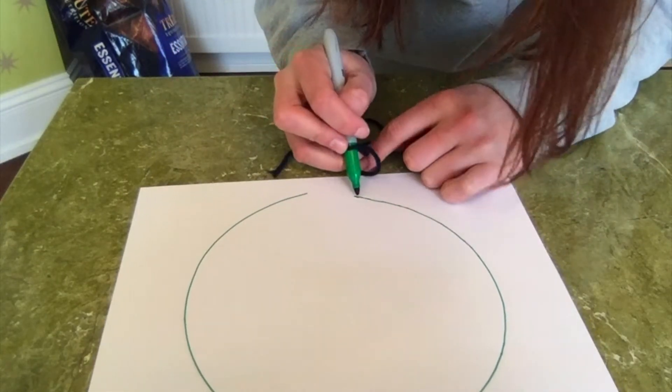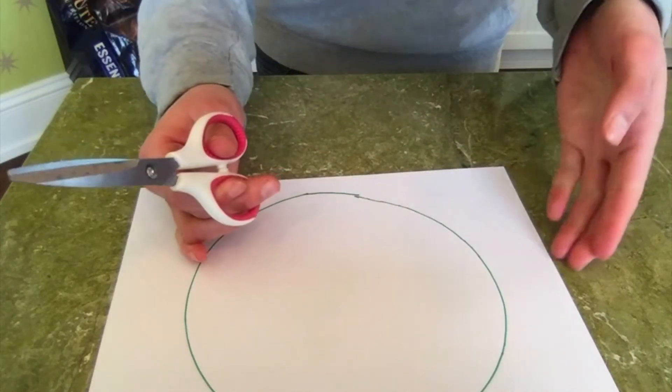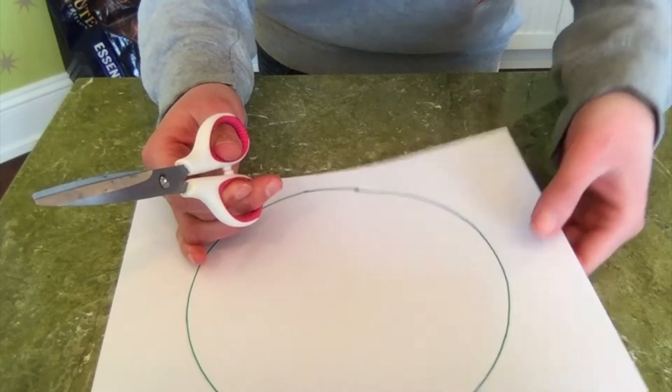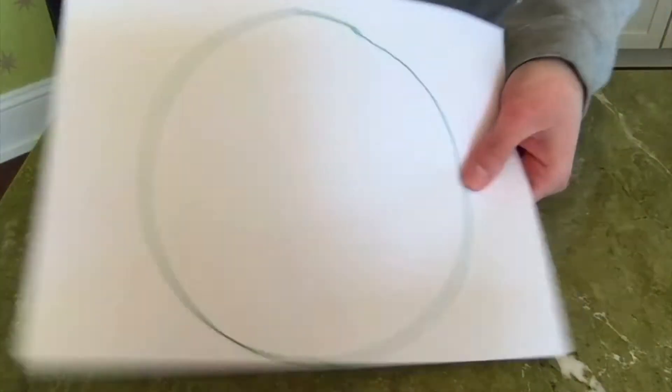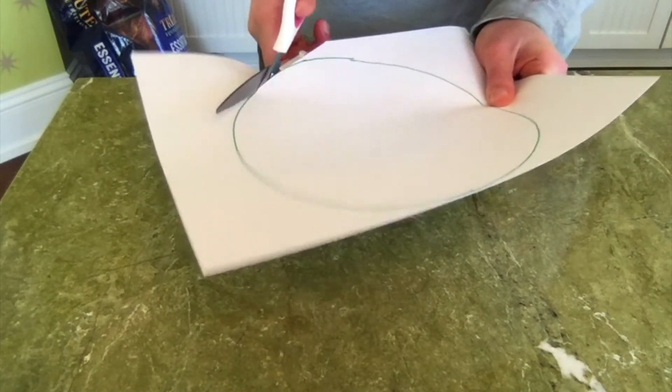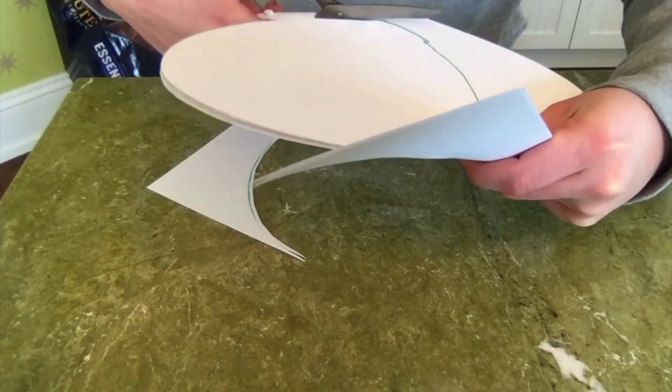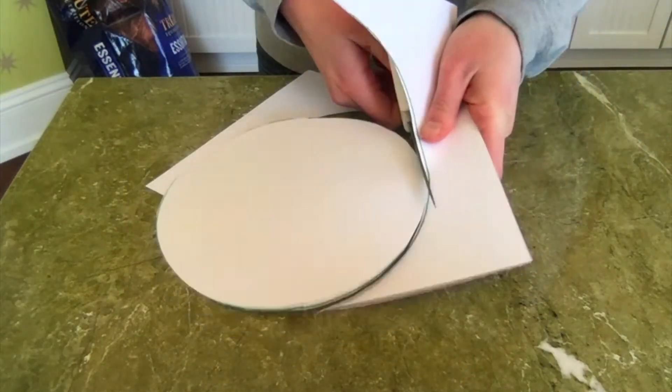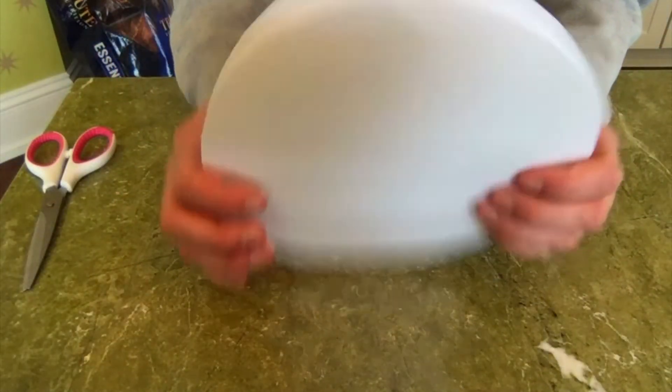I'm going to get my scissors to cut all the way around. Now remember we have two pieces of paper we have to cut, so as you're cutting make sure you are holding the pieces of paper together very firmly and making sure that they don't slide around as you cut. And there we have two perfect circles exactly the same size.